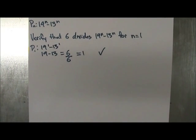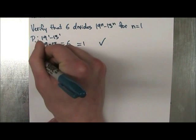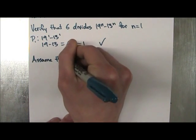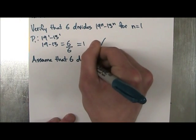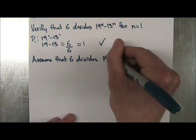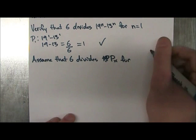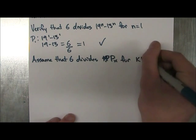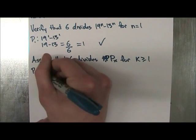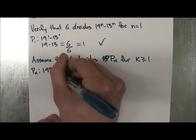We're going to move on to the next step, which because of the first step we can assume that 6 divides 19 or P_k for k greater or equal to 1, where P_k is 19^k minus 13^k.